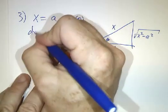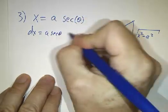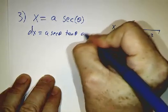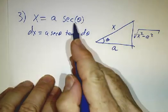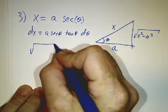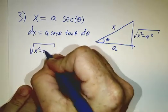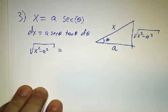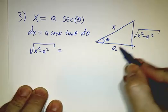So dx is a secant theta tangent theta dθ. See, you got to remember what your derivatives of secant are, and whenever you see a square root of x squared minus a squared, you say that's a squared, you say that's a times the tangent of theta.